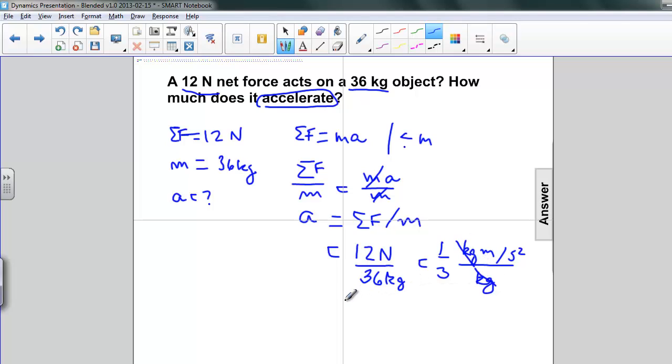Kilograms cancel, and we get an answer. One-third is 0.33. And we're left with meters per second squared, which is exactly what we would anticipate for an acceleration. So just to make this clear for you, 0.33 meters per second squared.